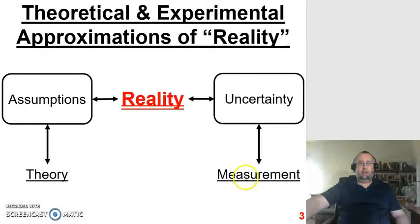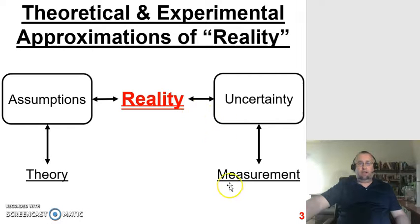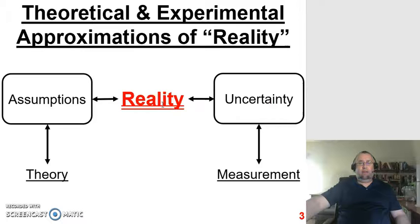On the other side of the ledger we have engineering measurement. No matter how much money you spend or how good your instruments are, it is virtually impossible to take an experimental measurement and get the exact, precise, error-free value of what's happening in the real process or system. So to connect reality to our experimental measurements, we attempt to determine the magnitude of the uncertainty of our instruments and our measurement process. The uncertainty is a range wrapped around the experimental measurement, and if calculated correctly, the true reality falls within that range.